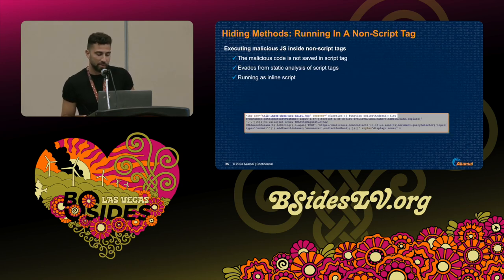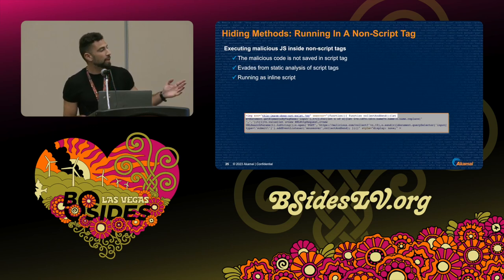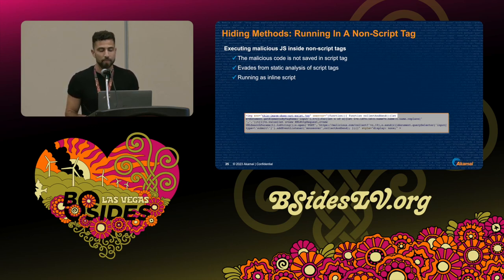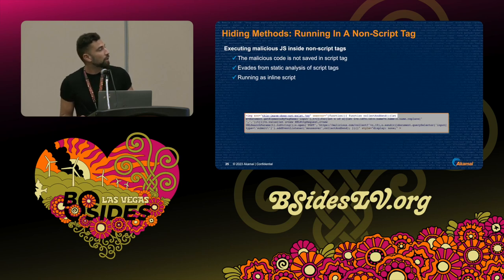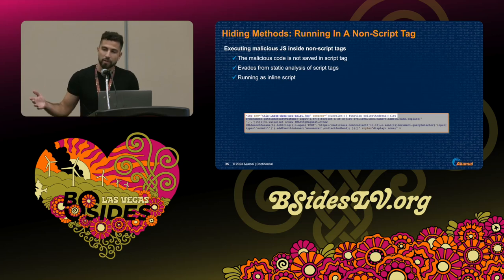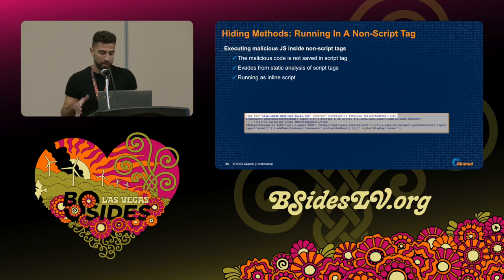Another way to run JavaScript outside of a script tag is running it in a non-script tag. You can see an image tag created with a source that doesn't really exist, and an onerror attribute set on it. Once the image fails to import, this JavaScript executes and initiates the Magecart attack. Static scanners tend to scan only script tags, so the malicious JavaScript running outside a regular script tag evades detection.